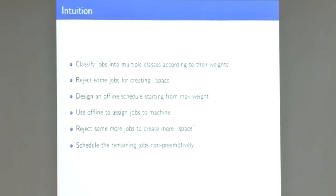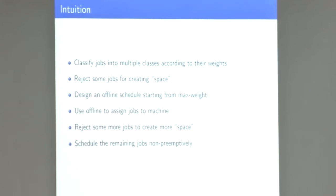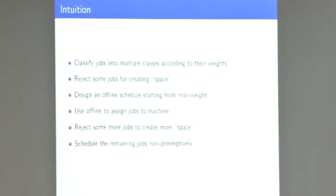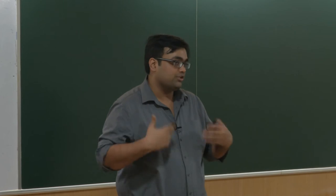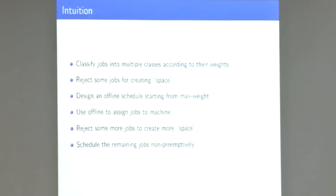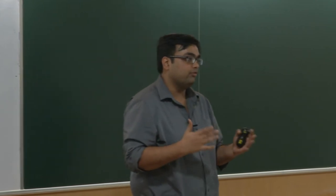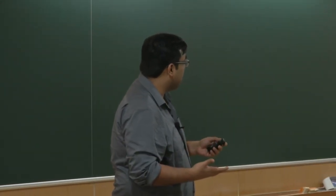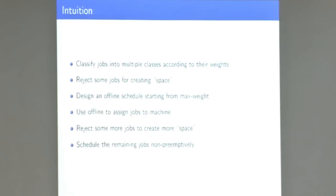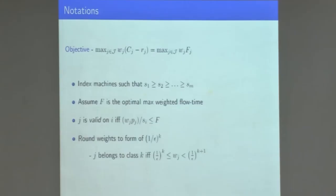Now, how do we extend to multiple weights and multiple machines? We classify jobs into multiple classes according to their weights — weights rounded to the form (1/epsilon)^k — and deal separately with each class. We are going to reject a small fraction of jobs in each class to create space, then design an offline schedule from max weight to min weight, giving priority to higher-weight jobs since their objective value is higher. Then we use this offline assignment to determine where to schedule each job online. We index machines by speed, with S1 the fastest and SM the slowest.